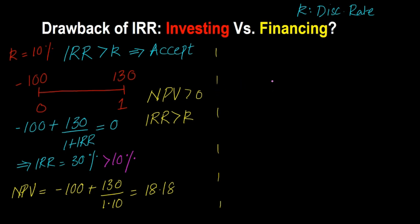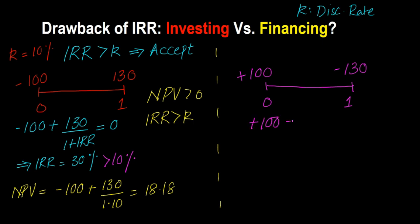Now let's change the situation just a little bit. Suppose you have an investment where at time period 0 you are getting $100, and then in year 1 you are making a payment — a cash outflow — of $130 at time period 1. If I ask you what is the IRR of this investment, you'd say: I am getting 100 and then I will be spending 130 divided by (1 + IRR), set equal to 0. If you do this math, the IRR comes out to 30% again — the same IRR.